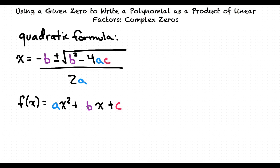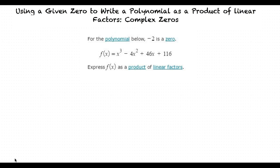I will go over the process of polynomial long division while we work on an example together, so let's get started. For the polynomial below, negative 2 is a zero. f(x) equals x cubed minus 4x squared plus 46x plus 116. Express f(x) as a product of linear factors.